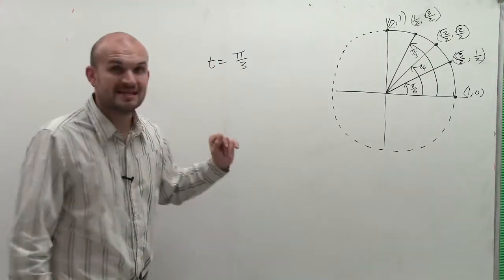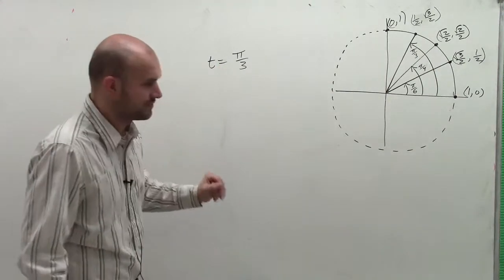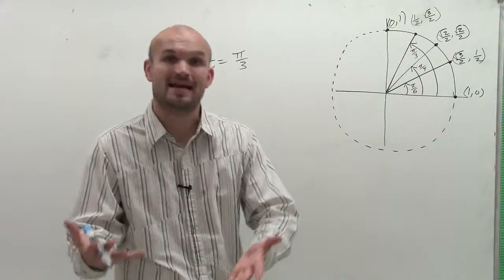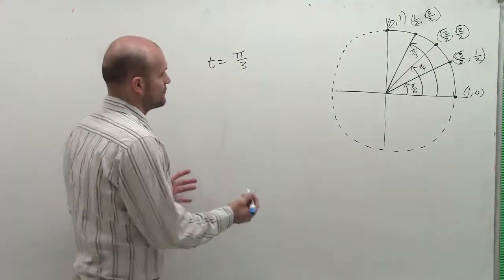For this first one, we have a pretty basic angle: t equals π over 3. So first of all, I need to determine where is π over 3. Remember, that's π over 3 radians.